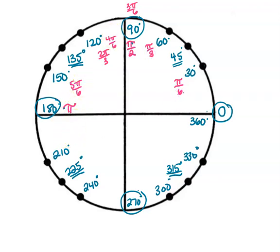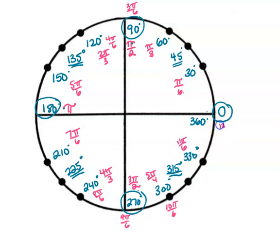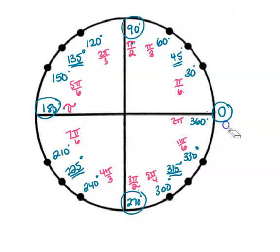Continuing: seven pi over six; eight pi over six reduces down to four-thirds; nine pi over six reduces down to three-halves; ten pi over six reduces down to five-thirds pi — that correction goes in the right spot; eleven pi over six; and twelve pi over six gives you two pi. You don't need to write the unreduced fractions — we only need the reduced fraction, but I wrote them so you could see where all those numbers were coming from. It's just a matter of adding one-sixth every time.